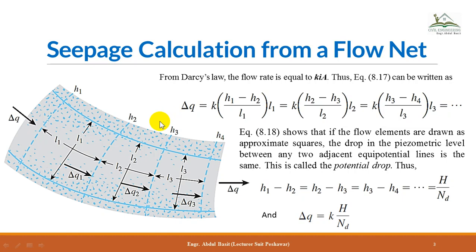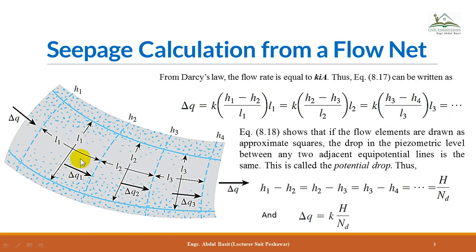According to Darcy's formula, discharge q = k·i·A, where k is the hydraulic conductivity, i is the hydraulic gradient, and A is the area perpendicular to the flow direction. The hydraulic gradient i equals the head difference divided by the length. For the first potential drop: q = k · (h1 − h2)/l1 · l1. Since the element is square, the height equals l1, and the out-of-plane width is unit, so area = l1 × 1 = l1.